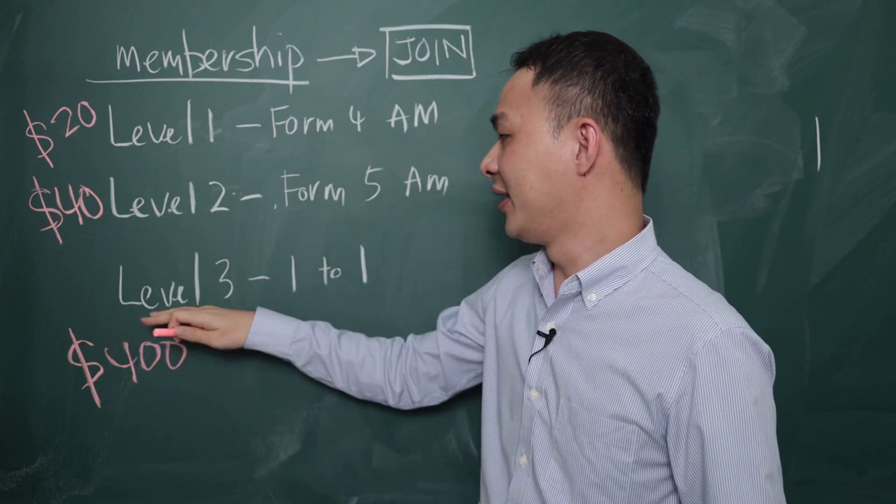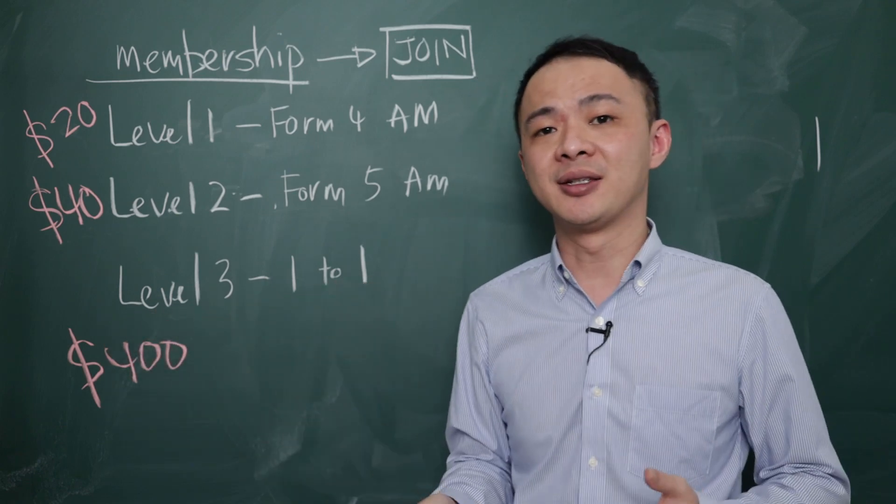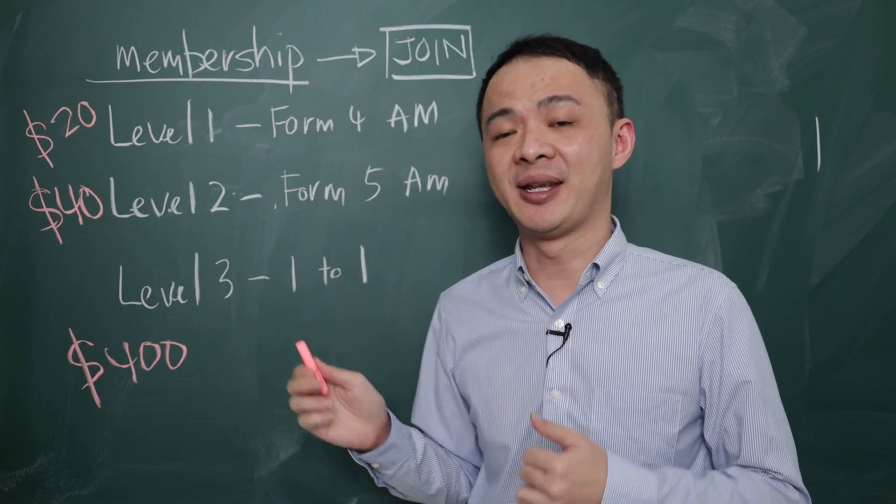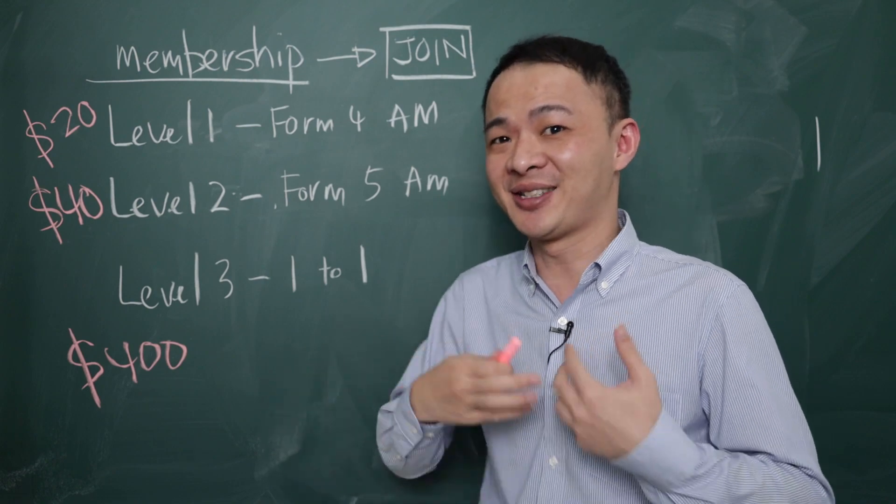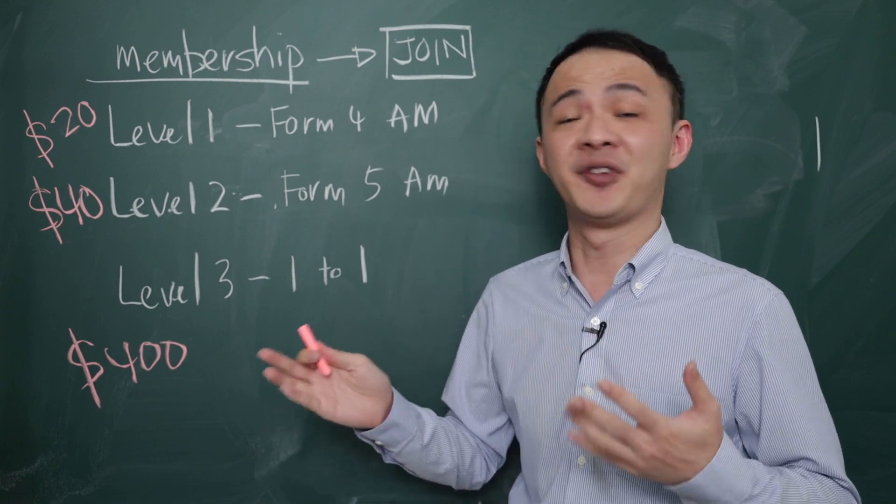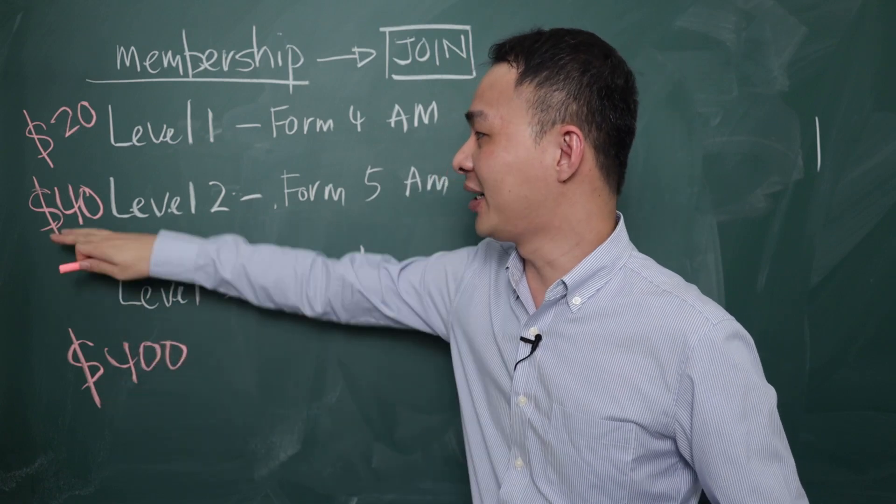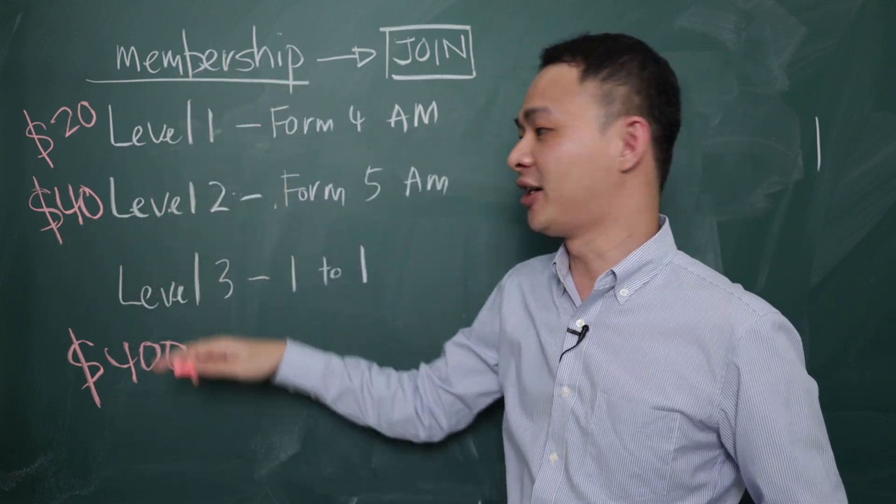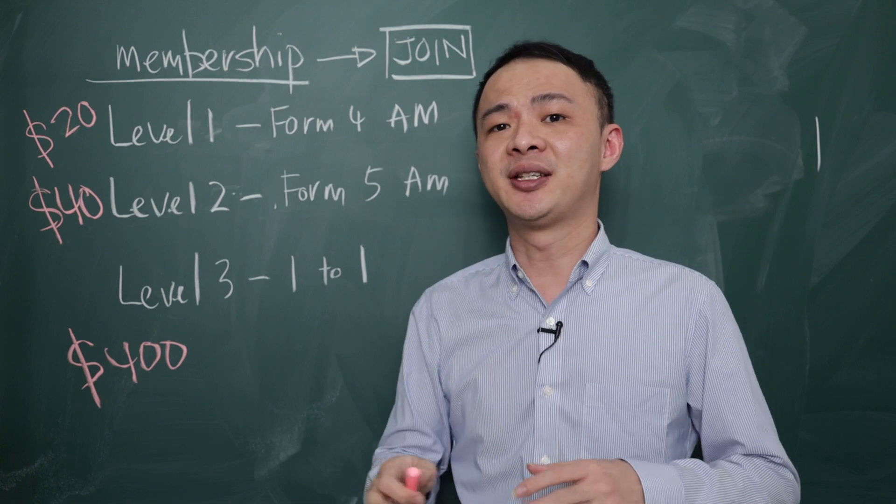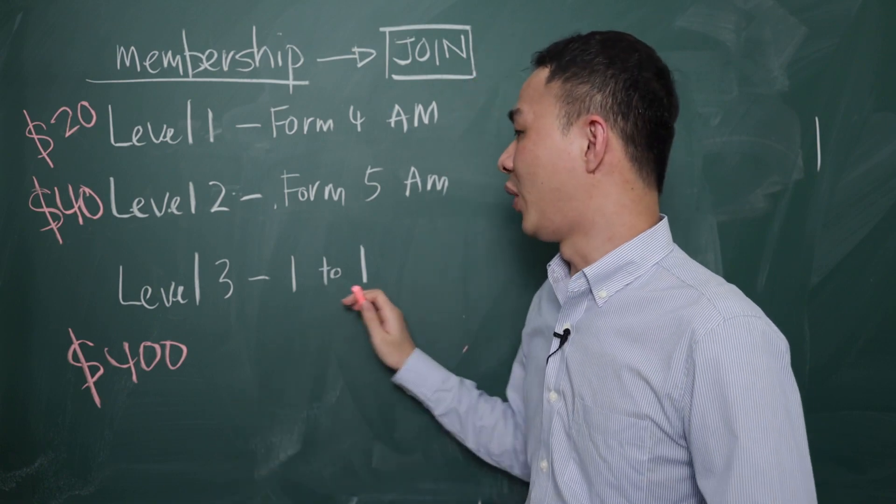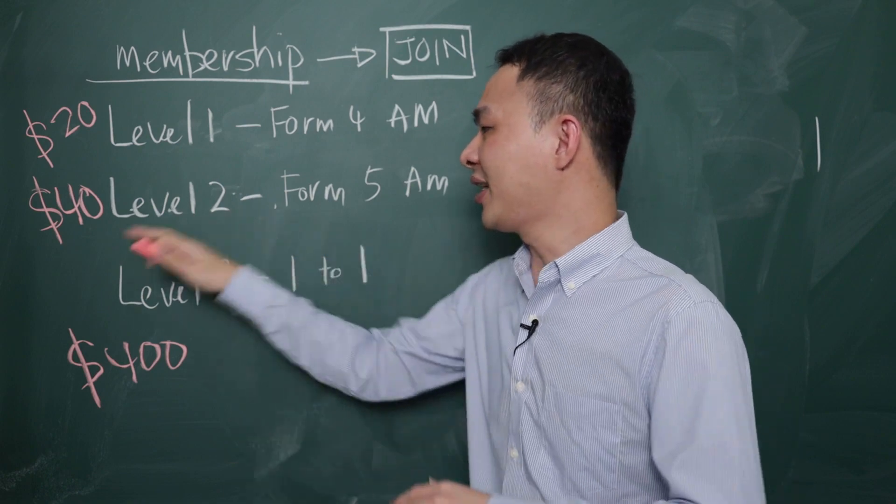And then lastly, is about 1 to 1 classes. I do provide 1 to 1 online for quite many years, but I'm charging myself actually quite high, it's about RM150 per hour. But over here, if it's 400, you minus 40 because you already have the RM40, it's about 360. So it's about RM120 per hour for my 1 to 1 classes.